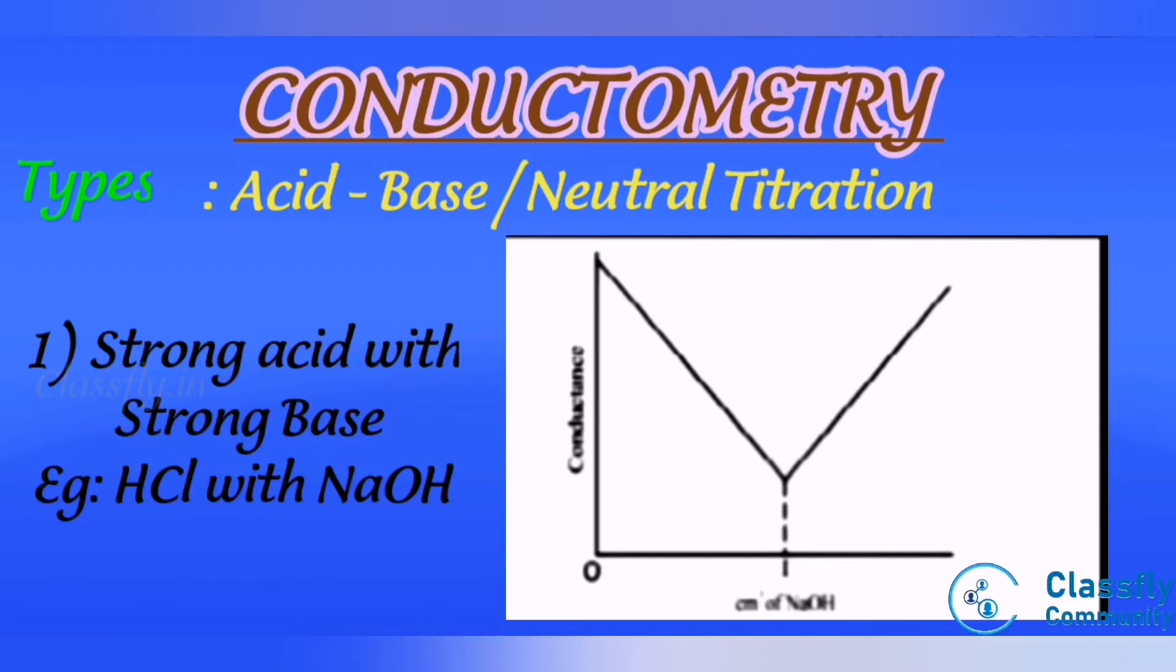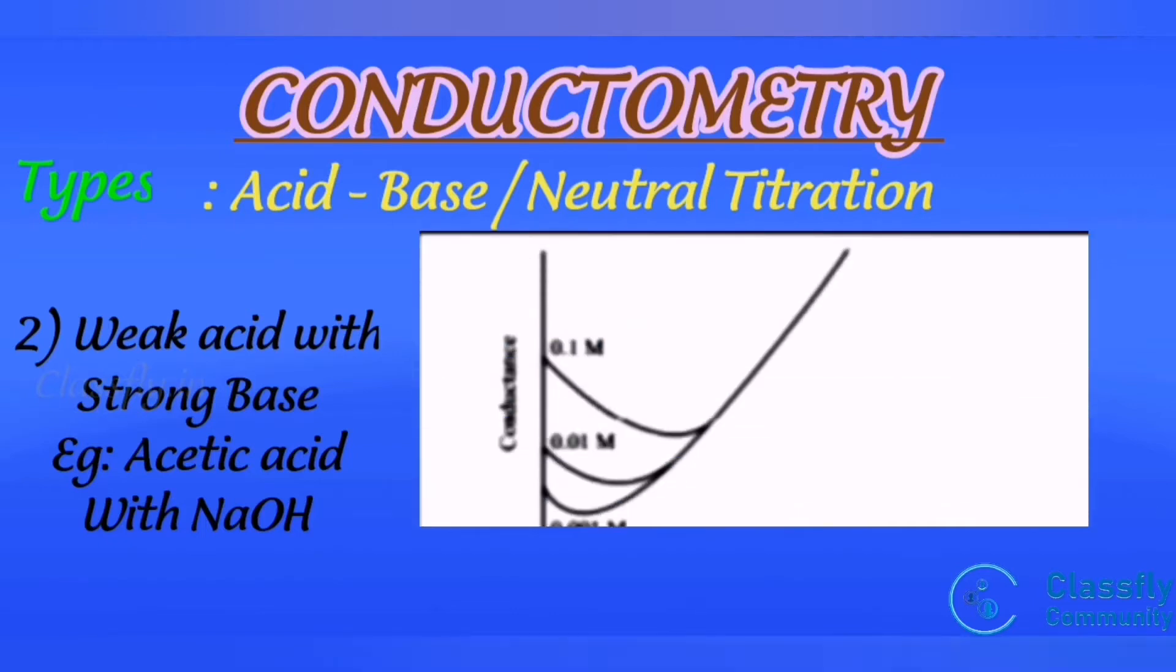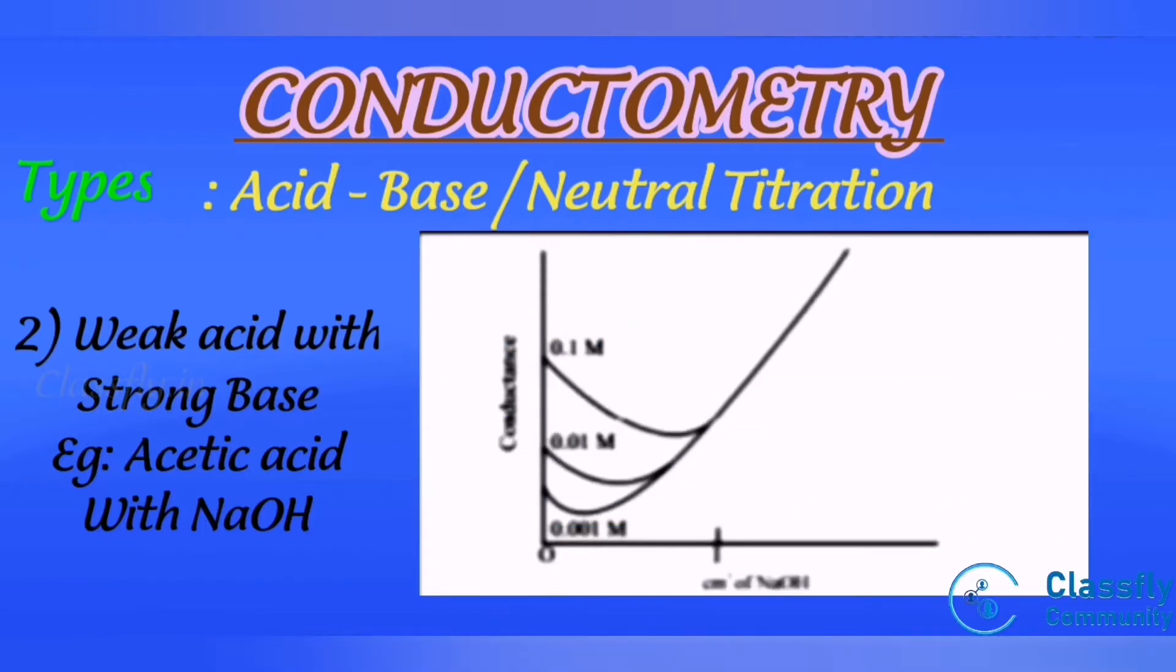Second one is weak acid with strong base, for example acetic acid with sodium hydroxide. Initially the conductance is low due to the feeble ionization of acetic acid, that is followed by the increase due to the sodium hydroxide. Beyond the equivalence point, steep rise due to the excess of sodium hydroxide.